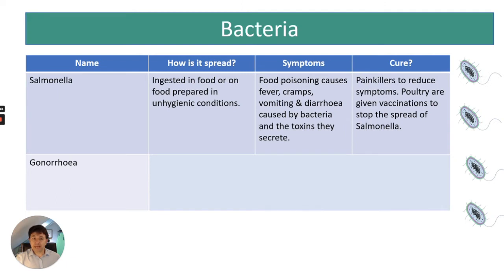Salmonella is a bacterial disease ingested in food or on food prepared in unhygienic conditions. Symptoms are food poisoning — fever, cramps, vomiting and diarrhoea — caused by bacteria and the toxins they secrete. You can reduce symptoms with painkillers, but antibiotics can kill the bacteria. Chickens bred for the meat industry are given vaccinations to stop the spread of Salmonella.